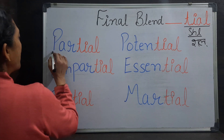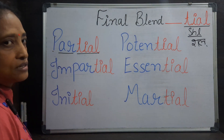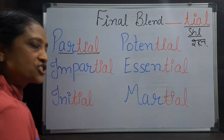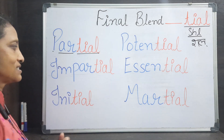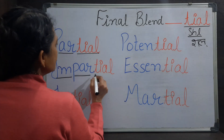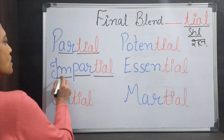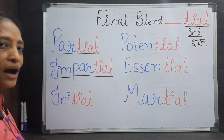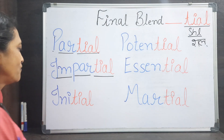Let's take some words. P-A-R-shl — Partial. Okay? P-A-R-T-I-A-L, the word's last is 'shl', right? After this: I-M-P-A-R-shl — Impartial. Right? We can break the word and read it at ease.